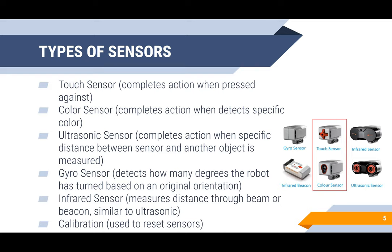There's the gyro sensor, which detects how many degrees the robot has turned based on an original orientation or position. There's the infrared sensor, which measures distance through a beam like a laser gun or a beacon, similar to the ultrasonic sensor. And there's the calibration sensor, which is used to reset all the sensors.